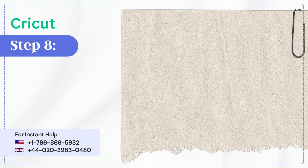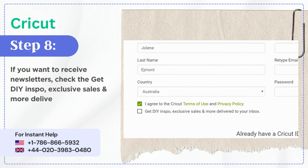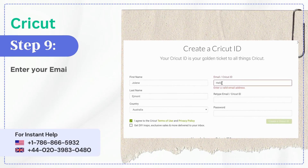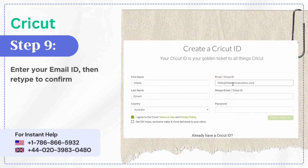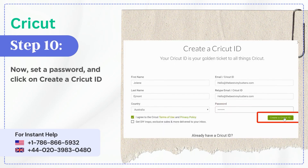Step 8: If you want to receive newsletters, check the 'Get DIY Inspo, Exclusive Sales and More Delivered to your Inbox' box. Step 9: Enter your email ID, then retype to confirm. Step 10: Now set a password and click on Create a Cricut ID.